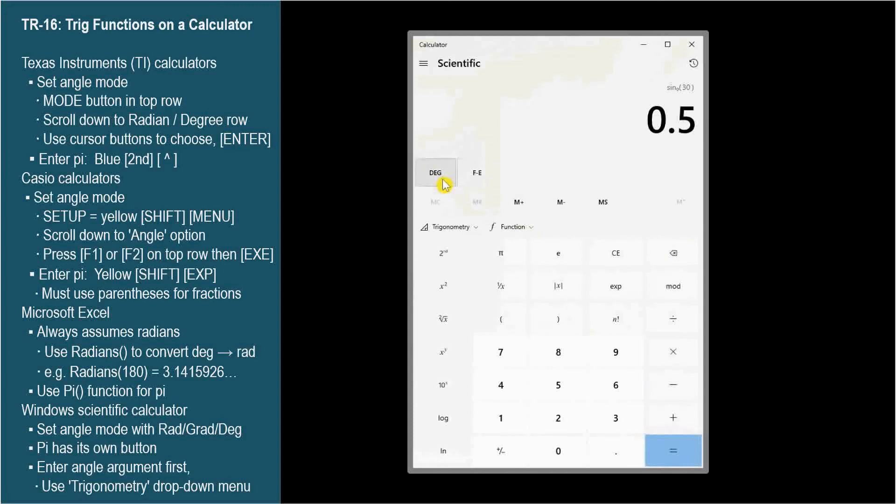For cosine 5 pi over 6, we need to go to radian mode. Click 5, times, pi has its own button here, division, 6.